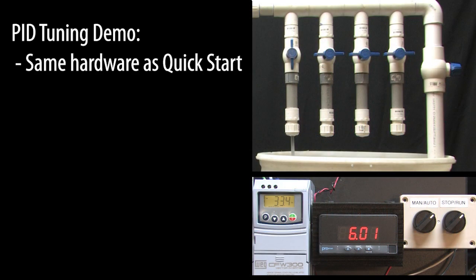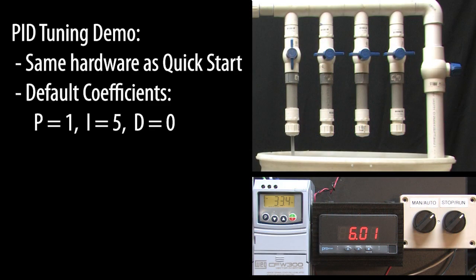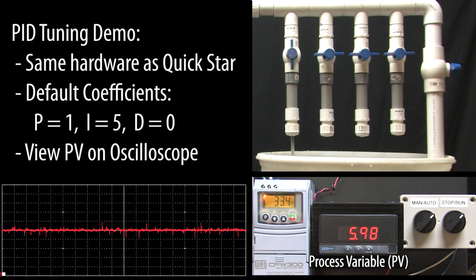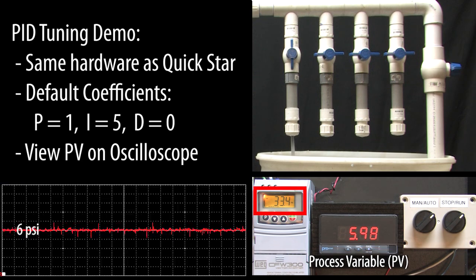Let's repeat the test we did in a quick start video with the default coefficients. But this time let's also watch the processed variable on an oscilloscope trace.